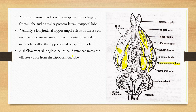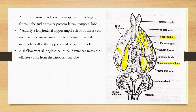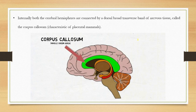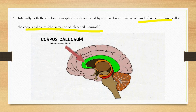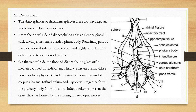A shallow ventral longitudinal rhino fissure separates the olfactory duct from the hippocampal lobe. The structure connecting the two hemispheres is called the corpus callosum, which is present only in placental mammals.